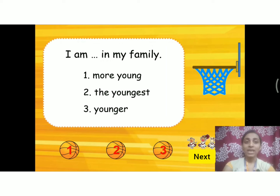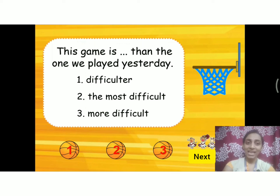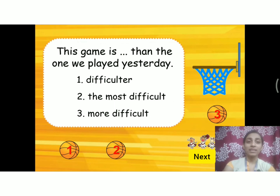Next question: I am _____ in my family. The options are: more young, the youngest, younger. The answer is 'the youngest' — because we are comparing within a group. Very good. Next: This game is _____ than the one we played yesterday. 'Than' indicates comparative degree. The comparative form of 'difficult' is 'more difficult'. So the answer is: this game is more difficult than the one we played yesterday.